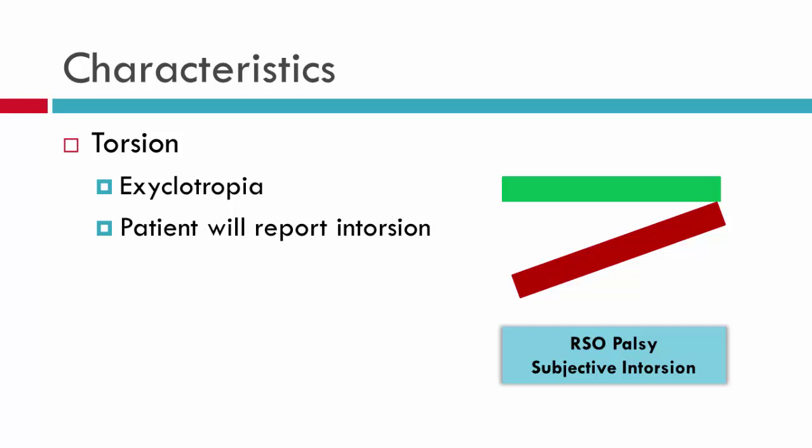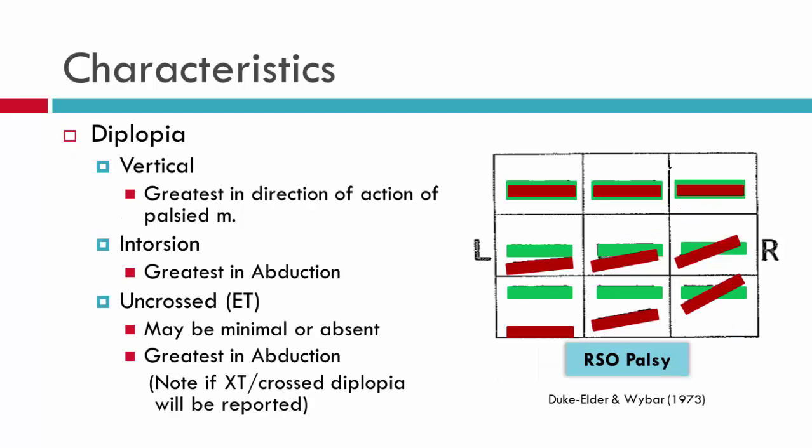In terms of torsion, given that we have an excyclotropia, patients with a 4th nerve palsy will report torsion. You will find excyclotropia on testing with measures such as double Maddox rods and the synoptophore.